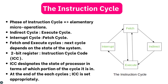Let us understand the instruction cycle by looking at each of its steps one by one. Each phase of the instruction cycle can be decomposed into a sequence of elementary micro-operations. In the above examples, there is one sequence each for the fetch, indirect, execute, and interrupt cycles. The indirect cycle is always followed by the execute cycle, and the interrupt cycle is always followed by the fetch cycle. The fetch cycle is either followed by the indirect cycle or the execute cycle, and an execute cycle is either followed by the interrupt cycle or the fetch cycle. For both fetch and execute cycles, the next cycle depends on the state of the system.